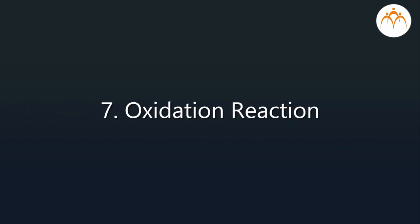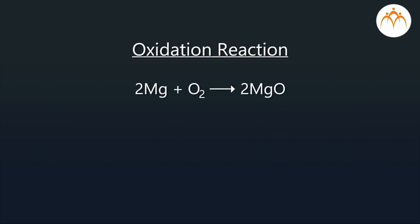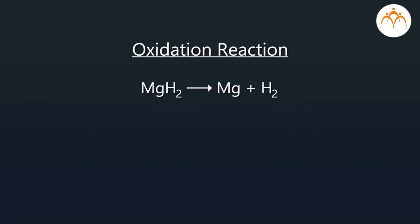Seventh, oxidation reaction. The reaction is known as oxidation when a reactant combines with oxygen. Example, 2Mg plus O2 gives 2MgO. C plus O2 gives CO2. When the compound loses hydrogen, then also the reaction is called as oxidation reaction. MgH2 gives Mg plus H2. Magnesium hydride decomposes to form magnesium and hydrogen. Ethane loses hydrogen and forms ethene.